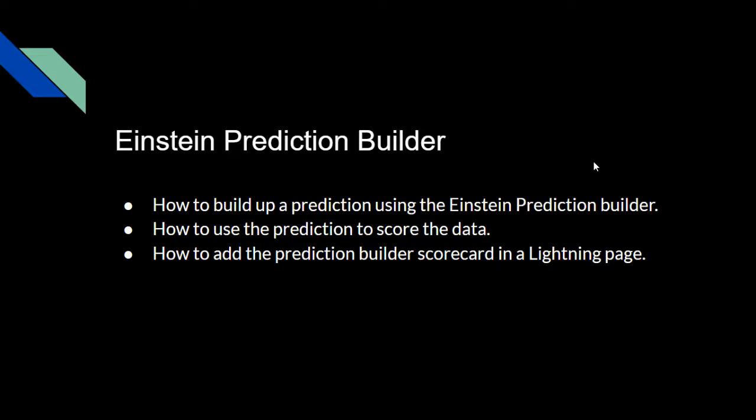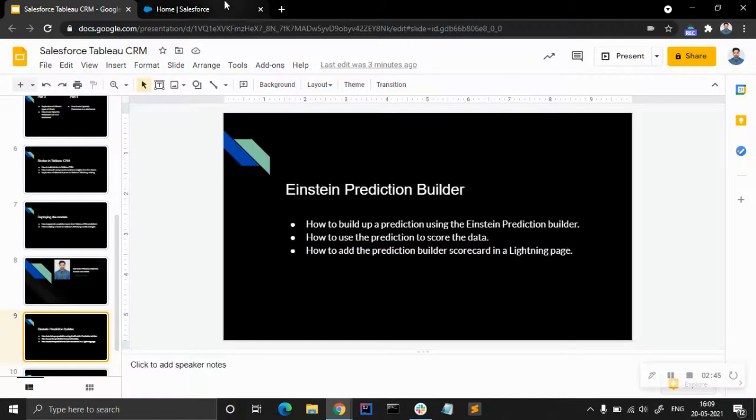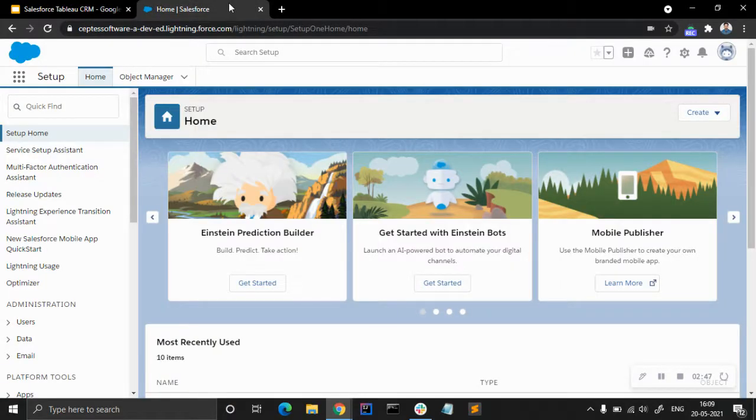We are also going to see how to add the prediction builder scorecard to a Lightning page. The scorecard helps keep track of top predictors — if there is a change in the top predictors, how the model is working, how much accuracy it is showing, and the correlation between different variables. Let's start with the Einstein Prediction Builder setup page in Salesforce.